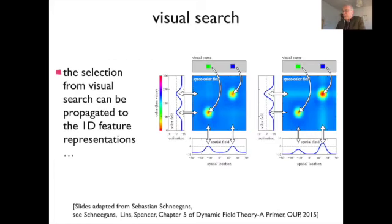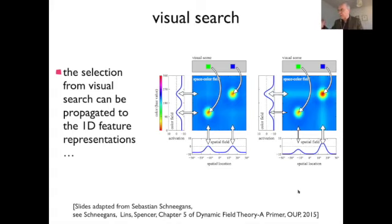Once you have that localized activation, you can extract information about the object. If you knew the color, you can then find the location — combining visual search with extraction of the corresponding feature. You can also go in the opposite direction: 'which color is at that location?' — the answer is blue. This is going in the reverse direction.